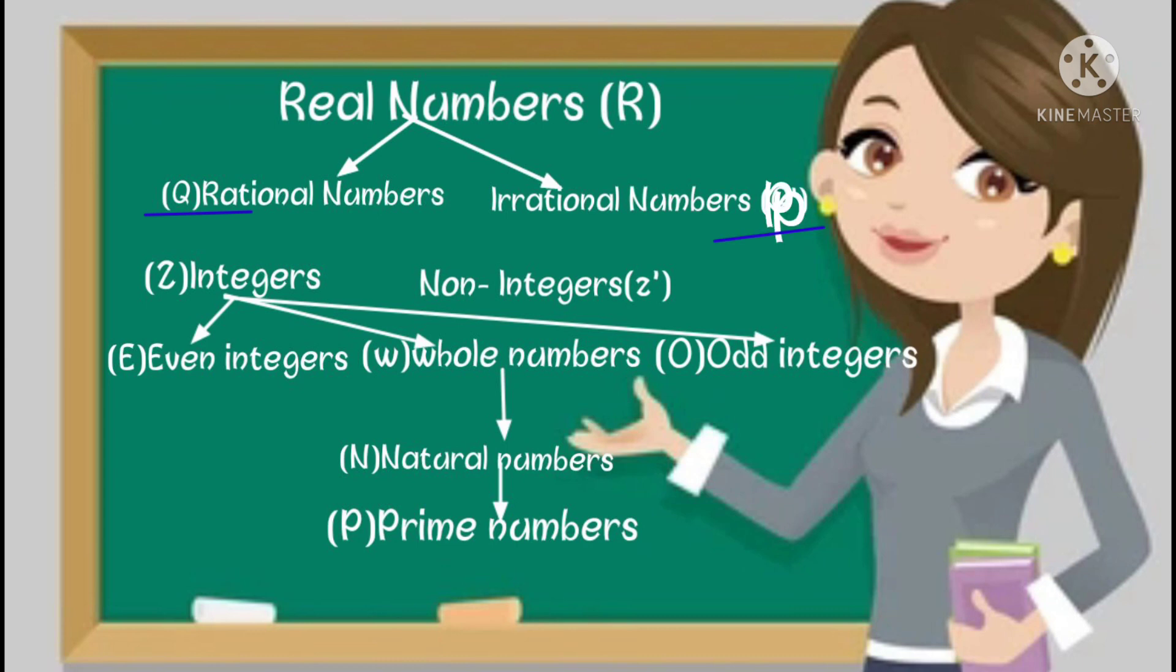So P is an entire set of irrational numbers. Q is an entire set of rational numbers. The set of integers is called Z. The set of whole numbers is called W, and the set of natural numbers is called N. The set of prime numbers is called P. The set of odd integers is called O, and the set of even integers is called E. Non-integers are called Z'. So students, these all letter names are very important from the exam point of view. It will come in MCQs.